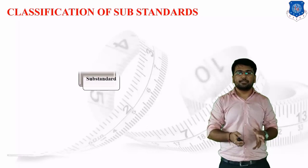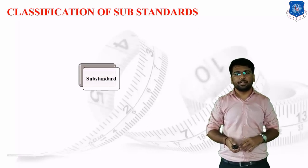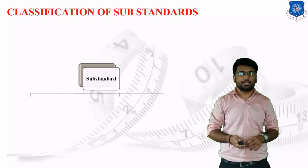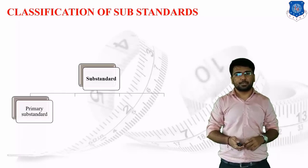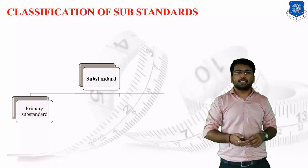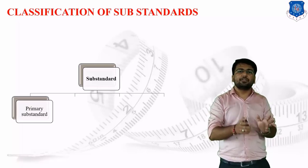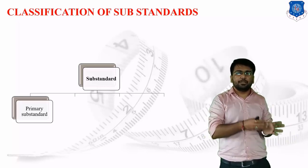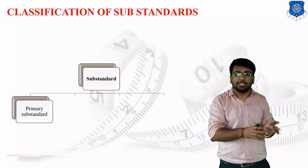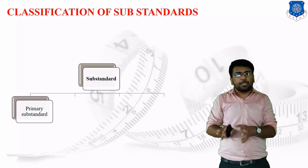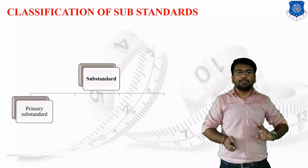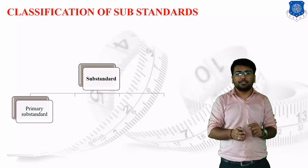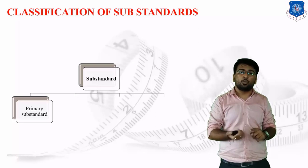Substandard has been classified in four different categories: Primary, Secondary, Tertiary, and Working Standard. The first one, Primary Substandard, means the basic reference standard. In the previous sessions we discussed the international meter standard, and that particular international meter standard has been placed in Geneva, Switzerland. That particular standard is known as the Primary Substandard.